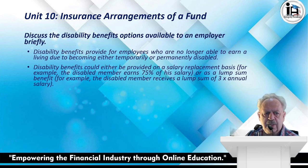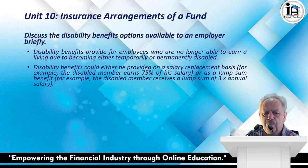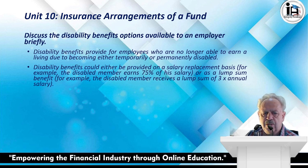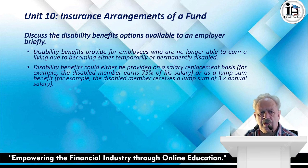Lastly, we discuss disability benefit options available to an employer. Disability benefits provide for employees who are no longer able to earn a living due to becoming either temporarily or permanently disabled. Disability benefits could be provided on a salary replacement basis - for example, a disabled member earns 75% of their salary - or as a lump sum benefit, for example, a disabled member receives a lump sum of three times their annual salary.